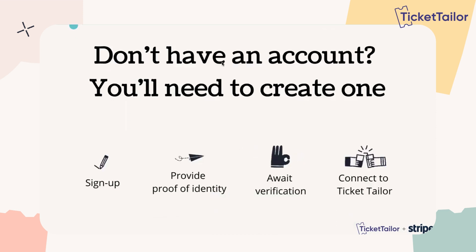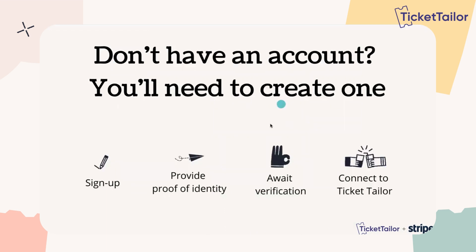When you set up a Stripe account, you just need to sign up online. They'll ask you some questions about yourself if you're a sole trader, or about your business to prove your identity. Sometimes they'll email you and ask for further identity verification, like a picture of your ID. But it's very quick — I actually run events with TicketTailor and Stripe, and I did this process and it took less than a week to be fully verified, just by replying to those emails. Once you've got a Stripe account, it's just one button to connect it to TicketTailor and you're ready to go.